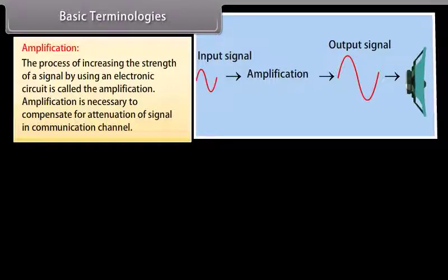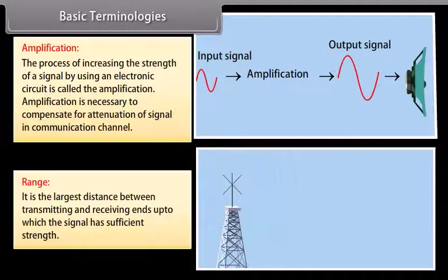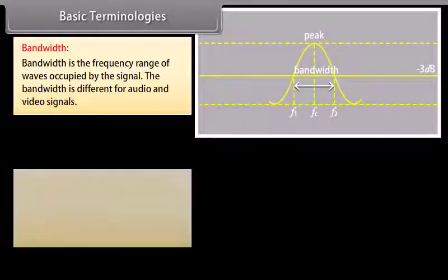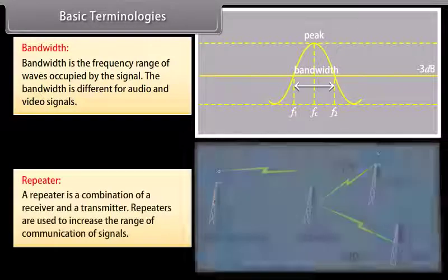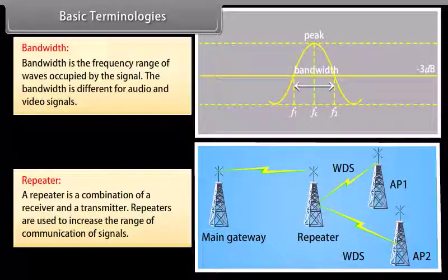Amplification is the process of increasing the strength of a signal using an electronic circuit. It is necessary to compensate for attenuation of the signal in the communication channel. Range is the largest distance between transmitting and receiving ends up to which the signal has sufficient strength. Bandwidth is the frequency range of waves occupied by the signal; it is different for audio and video signals. A repeater is a combination of a receiver and a transmitter, used to increase the range of communication.